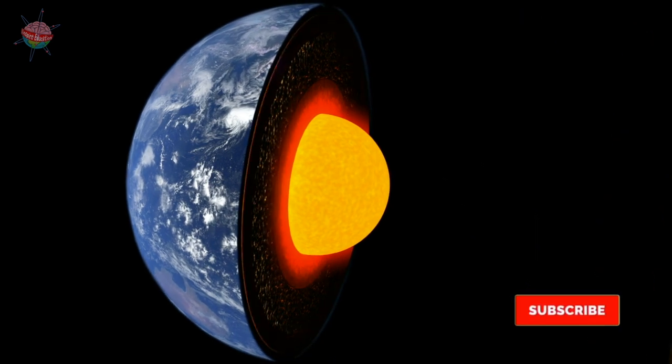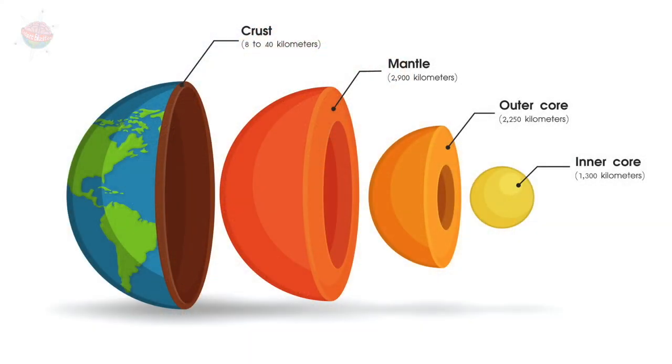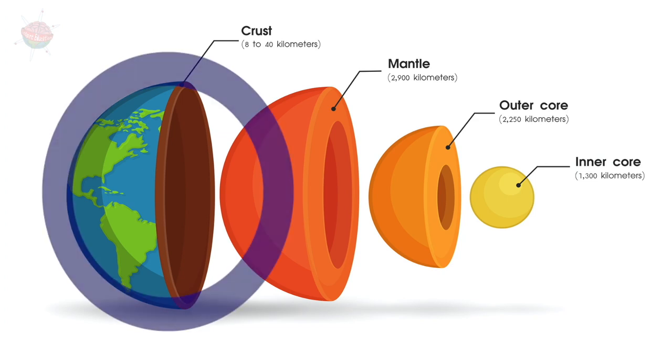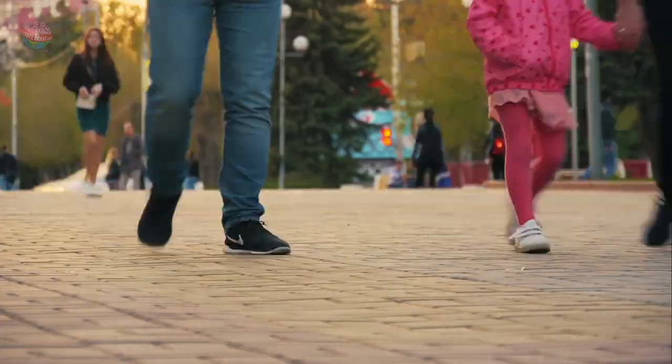The Earth has layers. The outer part is a thin layer of rock called the crust. We live on here.